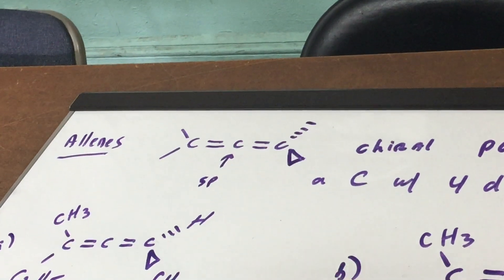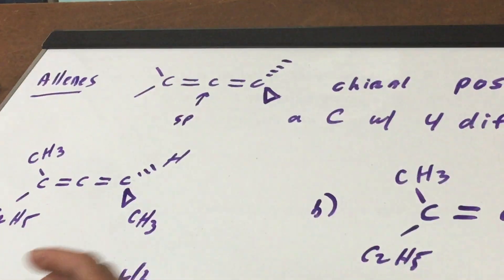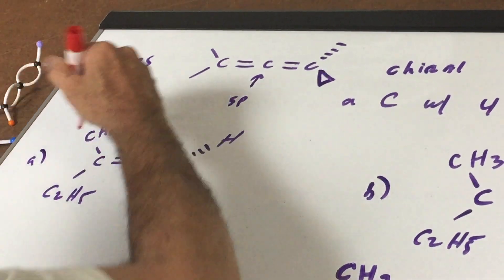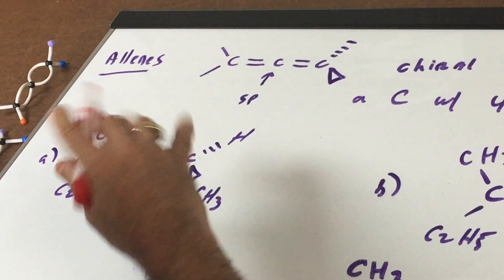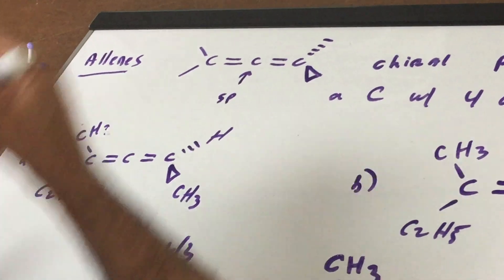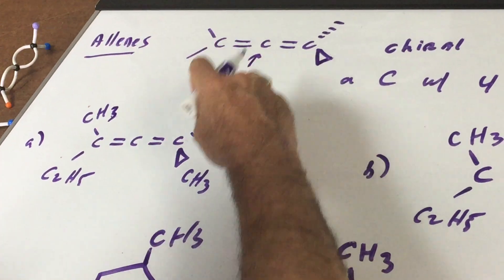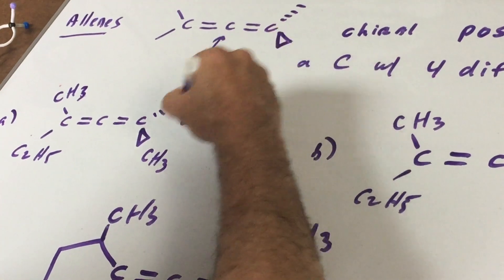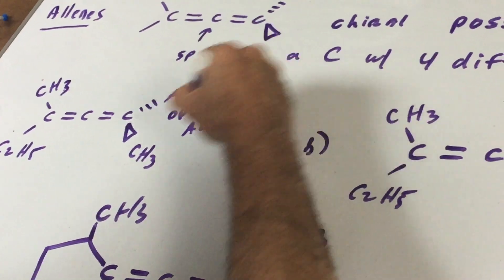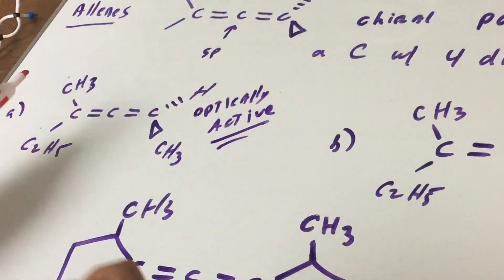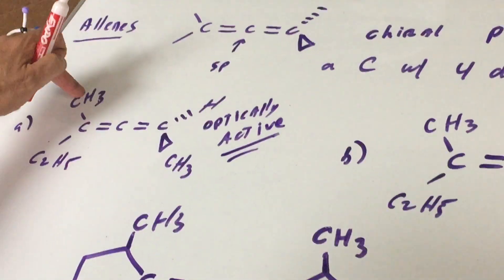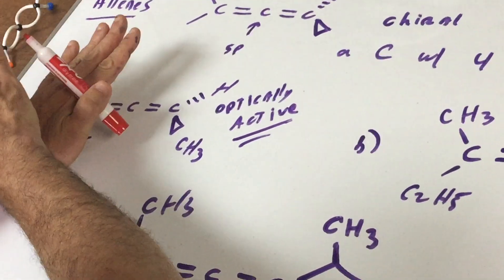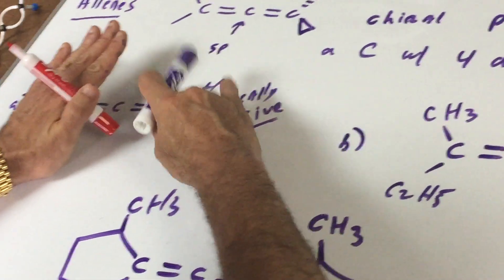And therefore it would be optically active. Now a little trick you can do is if this group and this group are different. Okay. Now go to the other side. If this and this are different then this would be optically active. If it's optically active means this would have an enantiomer. But this and this has to be different. And then you do the other side which is independent. This and this has to be different.